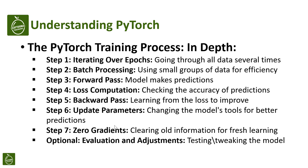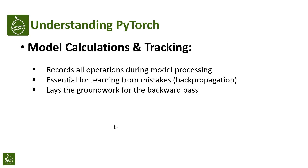Then we see how good the guesses are and calculate the loss. Then comes the backward pass, where PyTorch figures out how to change the model's parameters to make better guesses. We update these parameters, clear out old information, and if we want, we check how well the model is doing and make some tweaks.